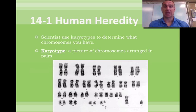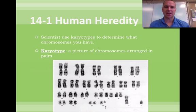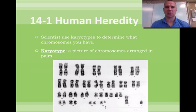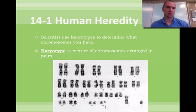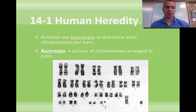I actually have my wife's karyotype, so you'll be able to see that tomorrow in class. A karyotype is basically a picture of your chromosomes. What scientists — or doctors — do is take a cell in your body, usually a blood cell, and take a picture of your chromosomes and pair them up.